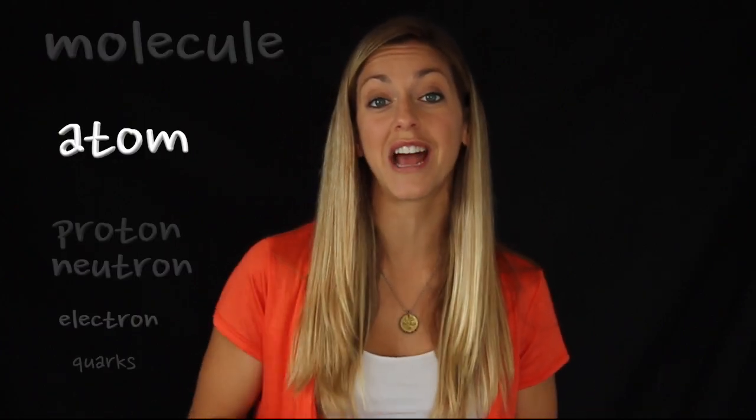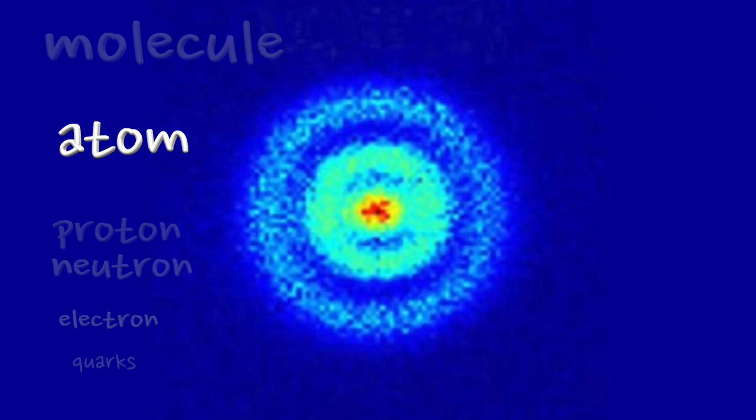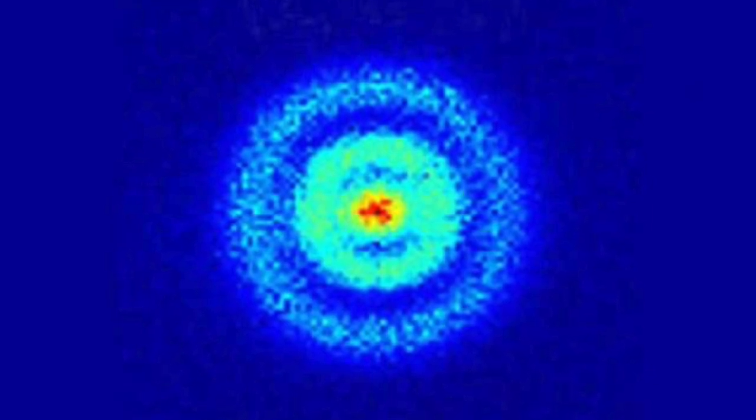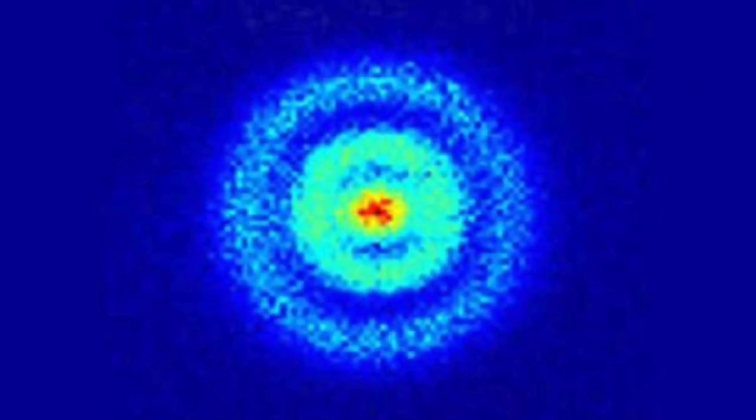Answering the original question: scanning electron microscopes have seen down to half a nanometer, which is still not small enough to see an atom. But in 2013, scientists imaged a single hydrogen atom for the first time using photoionization microscopy. What you're seeing here is the electron's wave function — the probability of finding it in different parts. This atomic portrait is the smallest picture we've ever taken, at the limit of what we've been able to see with microscopes.